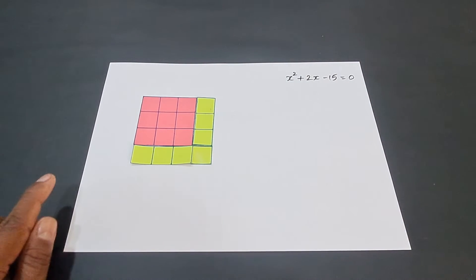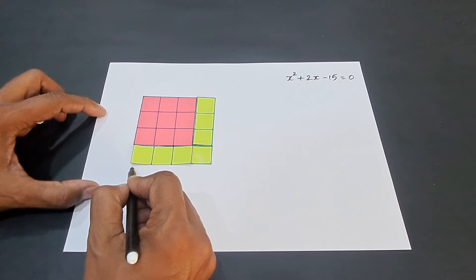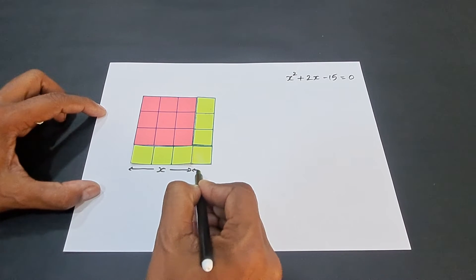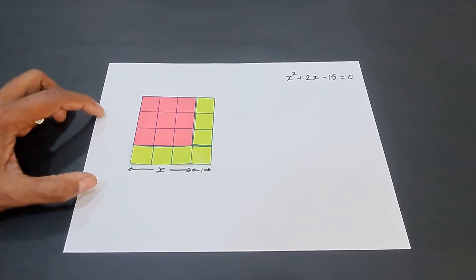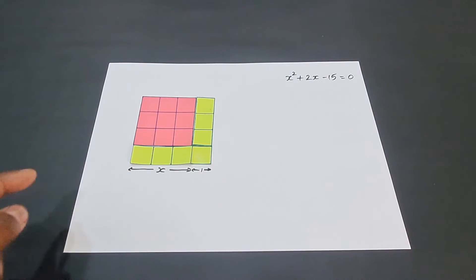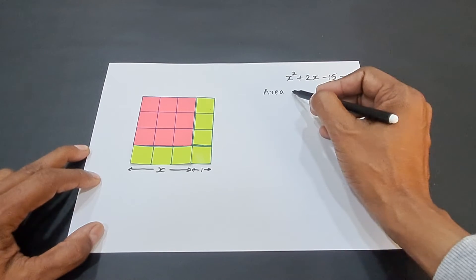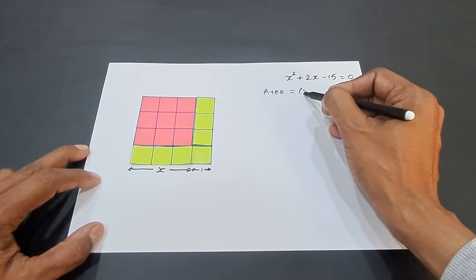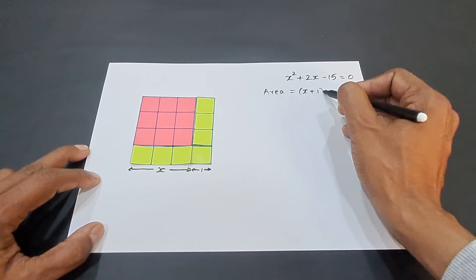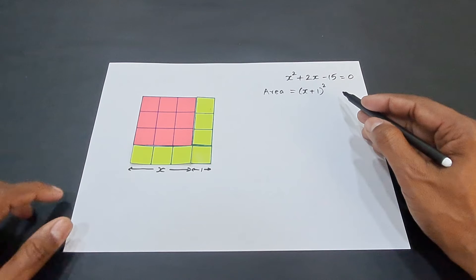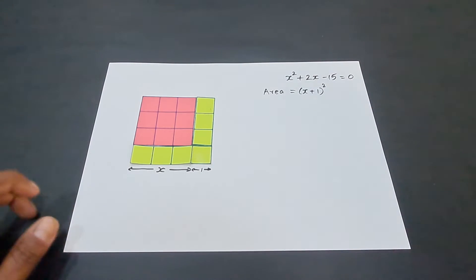If you assume that this side is x then this side is 1. So, the side of the larger square is x + 1 and therefore, the area of the larger square is (x + 1)² which is the side whole square. This is the area of this big square. Now, how do you tackle this after this?